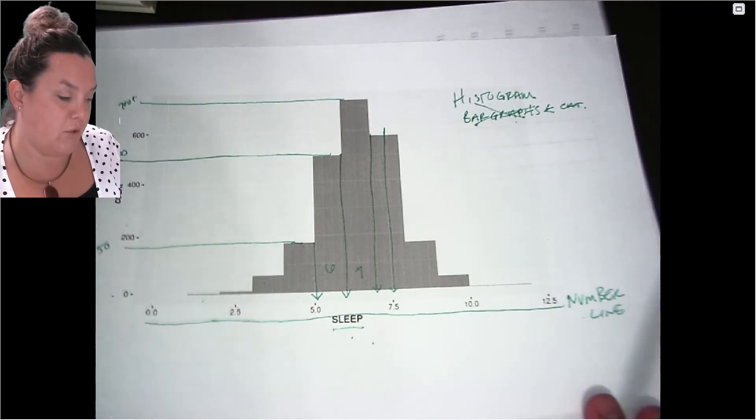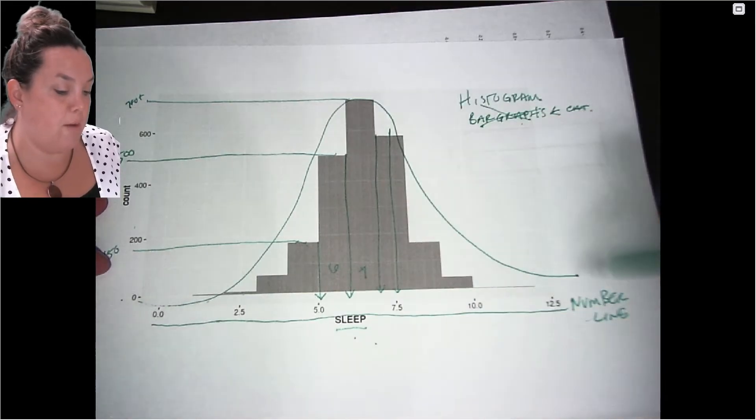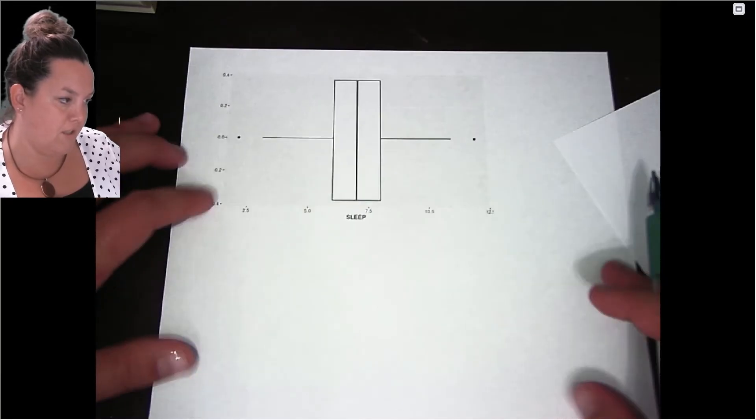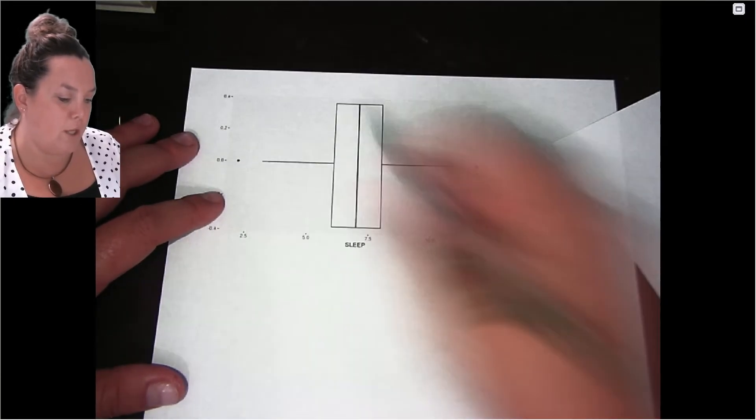Now this is helpful when we get to describing a distribution because it helps you to see the shape of it, whereas here, which we've talked about these before, this is our box plot. It's the same data but you can't see shape as easily.